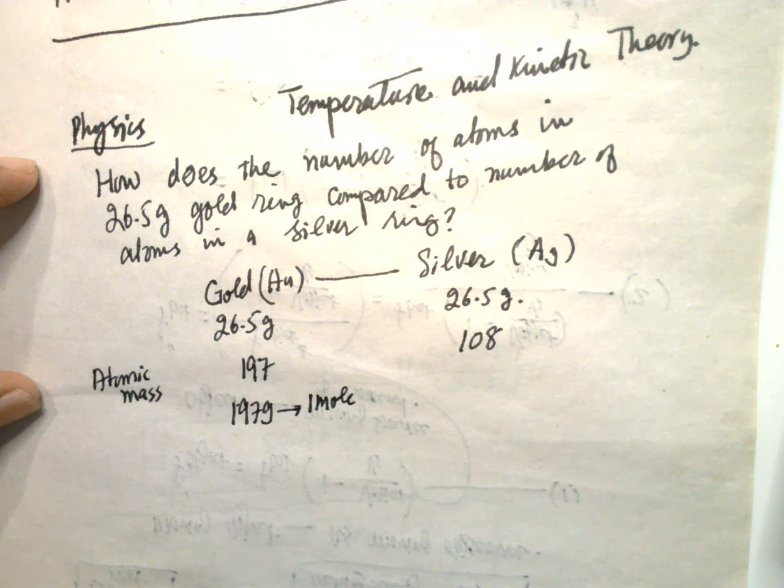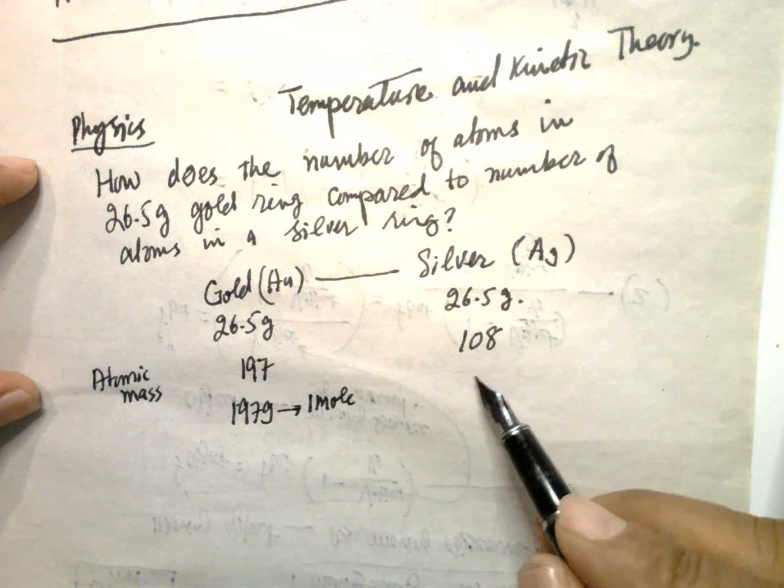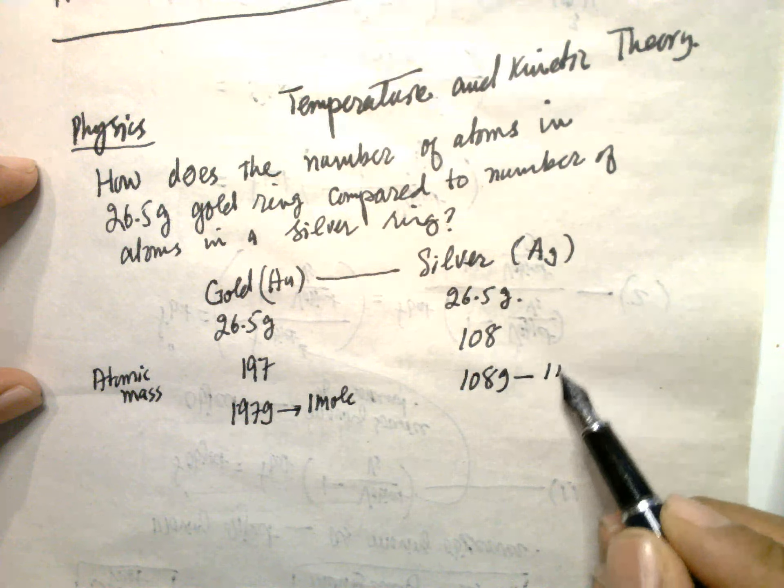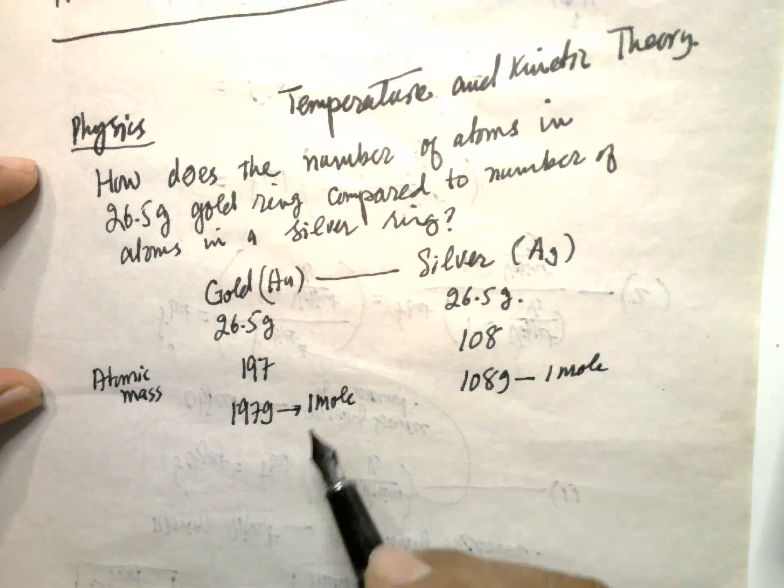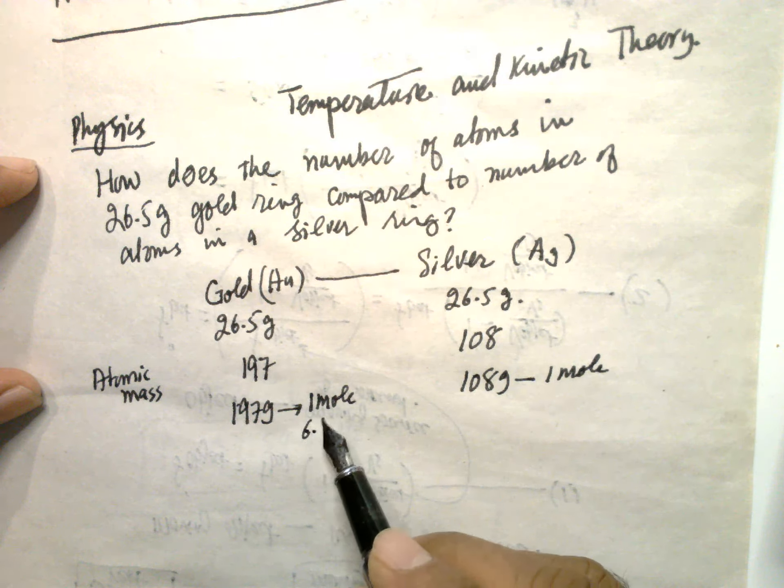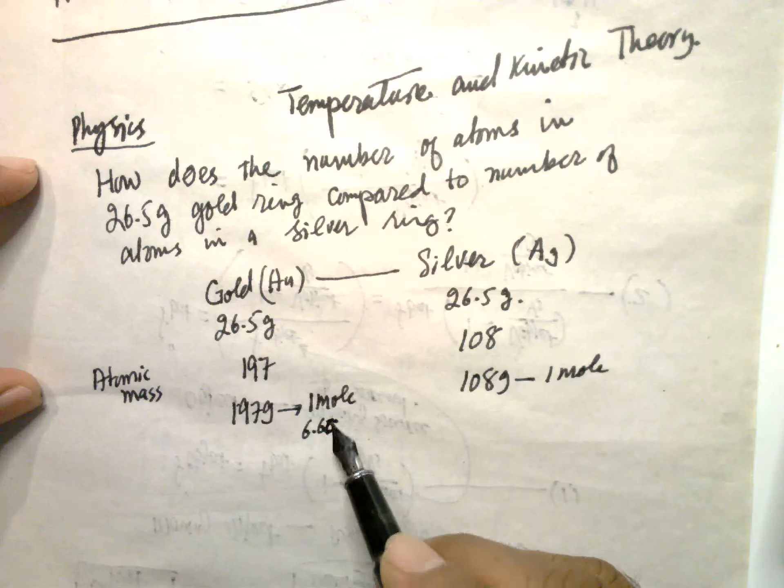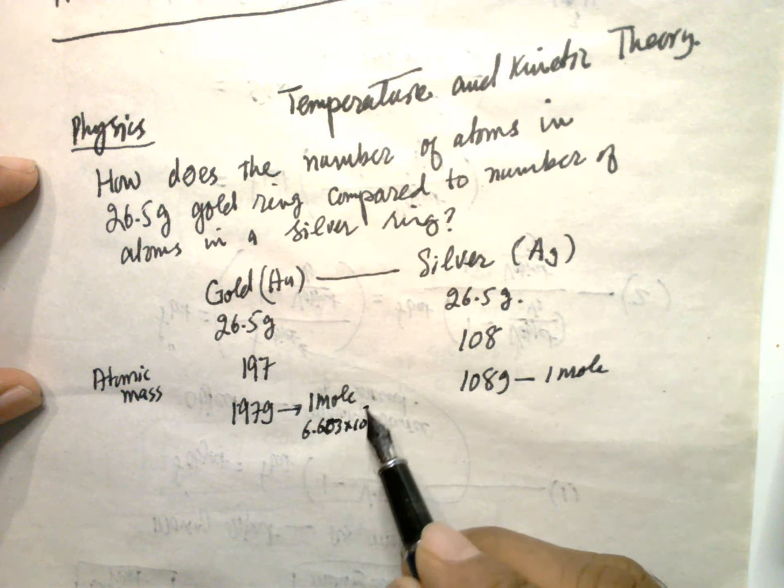One mole, not Avogadro number, one mole. And 108 grams is one mole. And one mole means 6.02 times 10 to the power 23 molecules.